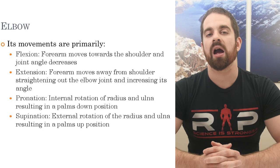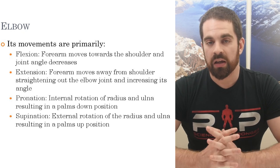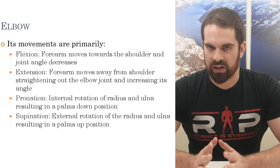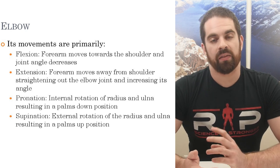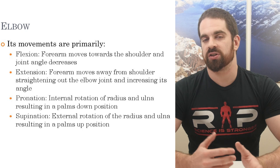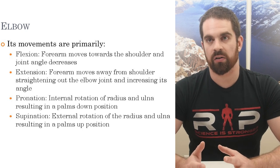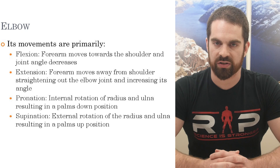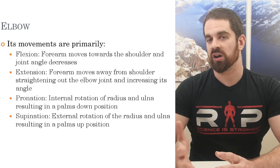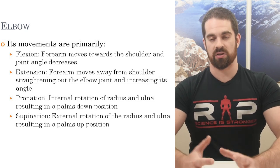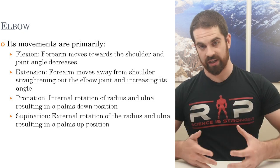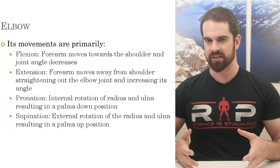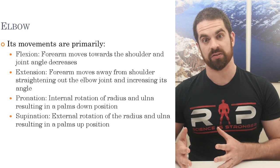Those are the primary movements at the elbow. These are very cut and dry, linear movements. Keep in mind that real-life movement is usually a combination of multiple movements. If you're throwing a baseball or a football, you'll see a combination — it won't be purely described as flexion/extension or pronation/supination alone. But this gives us a really good basis to start from.